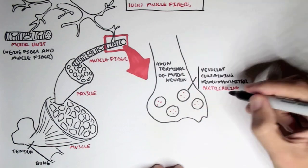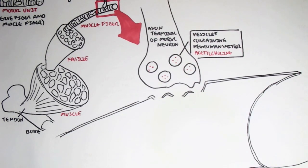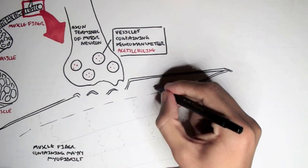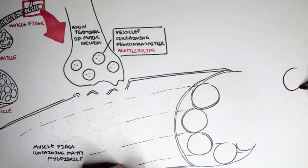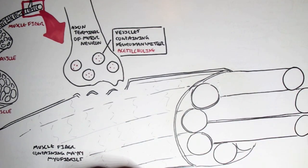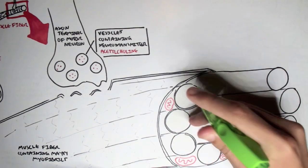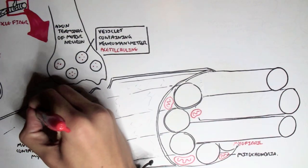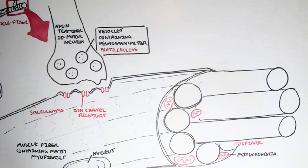Now let's look at the muscle fibers. Here we have one muscle fiber, and the muscle fiber contains many myofibrils. Within the muscle fiber we also have mitochondria which can provide ATP. We also have many nuclei around the muscle fiber, because the muscle fiber is multi-nucleated. The muscle fiber has a membrane called the sarcolemma, which contains many receptors and ion channels.